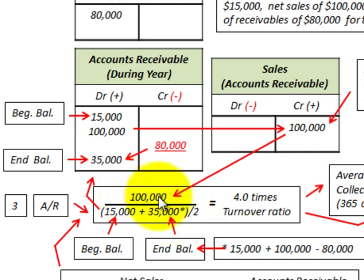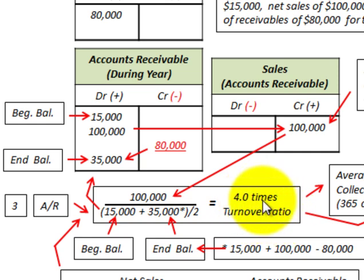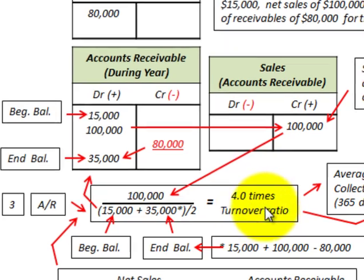For the numerator, $100,000 divided by $25,000 gives us four times as the turnover ratio. That's how many times we turned over our accounts receivable.